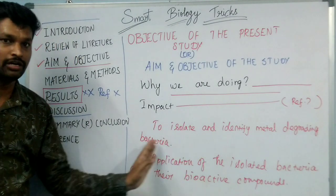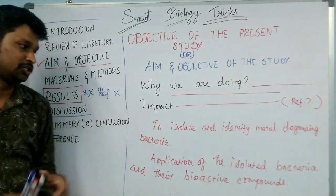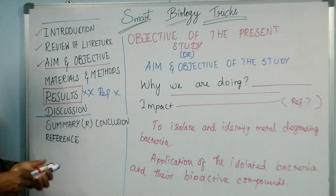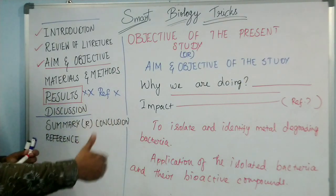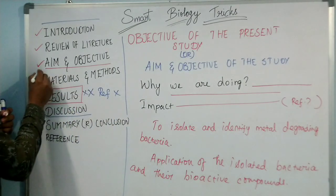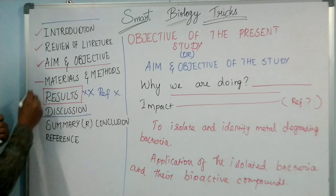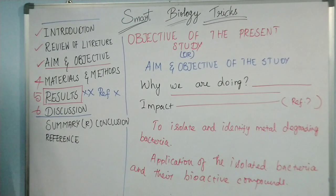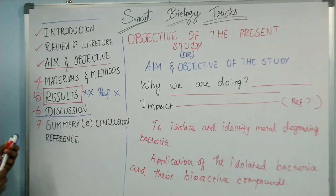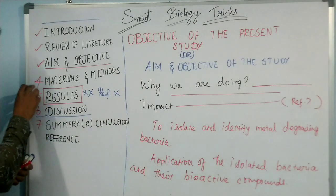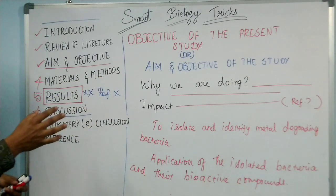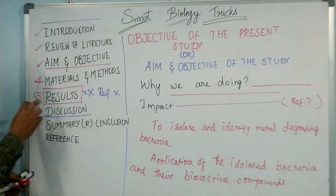You should mention objectives one by one — two or three objectives. At the end of the objective, state what chapters are going to be covered in the next sequence. In the aim and objective, mention chapter 4, chapter 5, chapter 6, chapter 7, and what is going on in each. Chapter 4 comprises materials and methods of the study, chapter 5 comprises results of the present study, and chapter 6 contains the discussion.